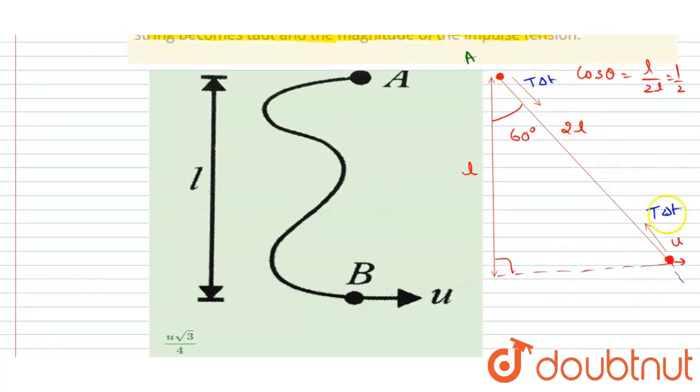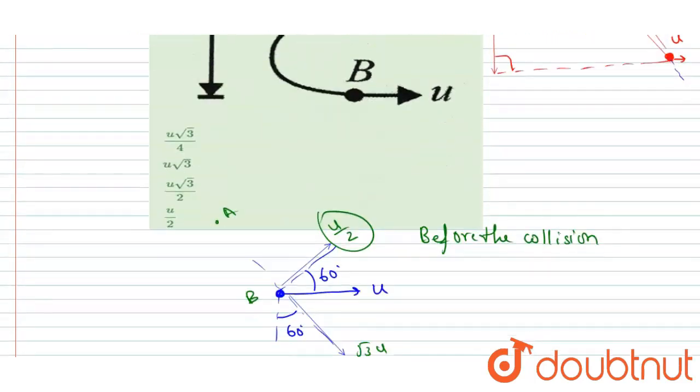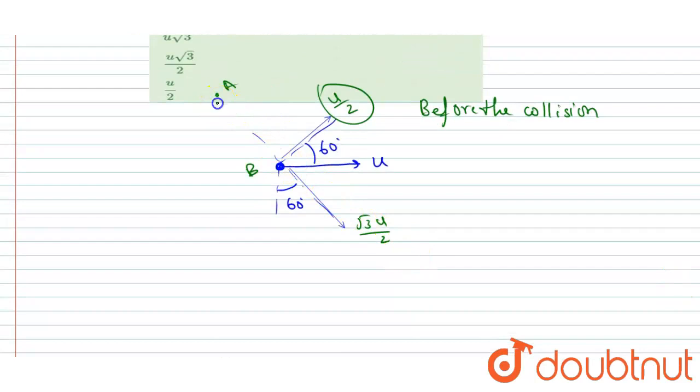B will also experience the impulse along the string, but the direction of the impulse on both of them will be equal and opposite. So it will be acted by T dt and T dt.